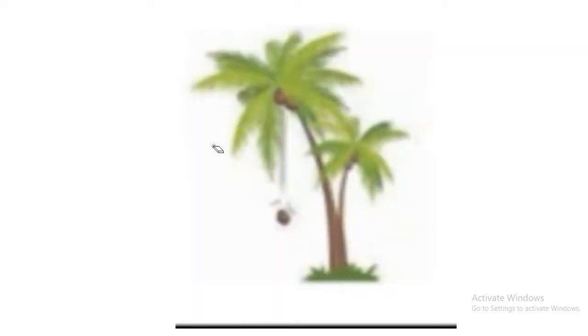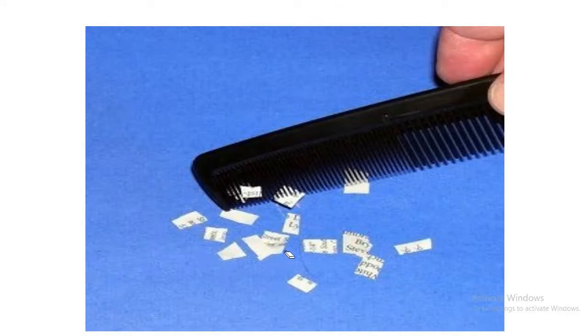Now, in this figure, you can see that the nails have got attracted to the poles of a magnet due to magnetic force. Here, you can see that the coconut is falling from a coconut tree due to Earth's gravitational force. When a comb gets rubbed against hair, small pieces of paper kept on a table get attracted to the comb.